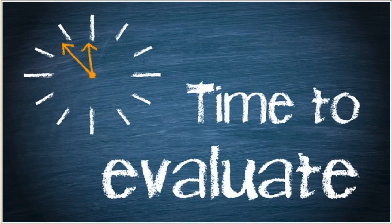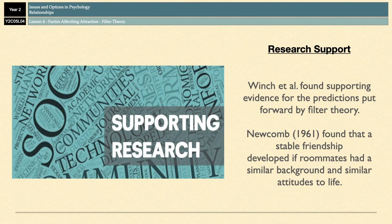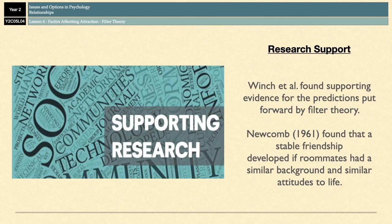There is some research support for Filter Theory. Winch in 1957 found that similarity of interests, attitudes, and personality traits were very important for couples in the beginning of relationships, and then complementarity of needs had more of an impact on long-term relationships. Also, Newcombe in 1961 offered participants free accommodation for a year, assigned them a roommate, and found that a stable friendship developed if roommates had a similar background and similar attitudes to life. Such studies support the predictions of Filter Theory and improve its validity.